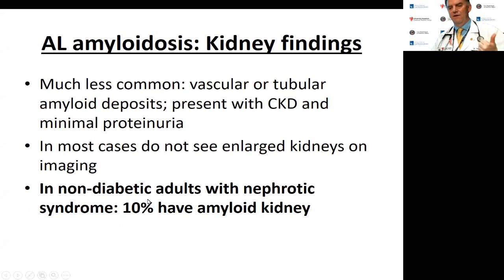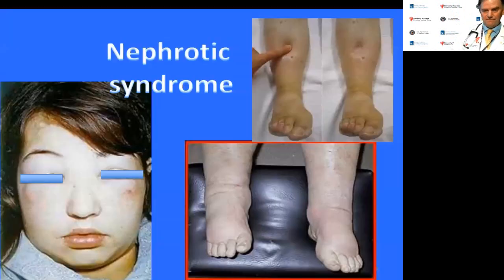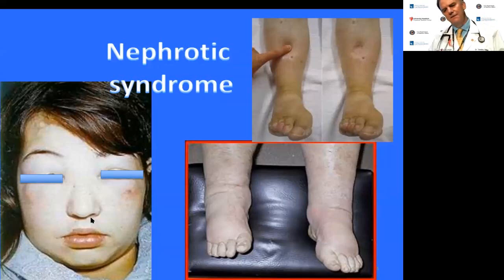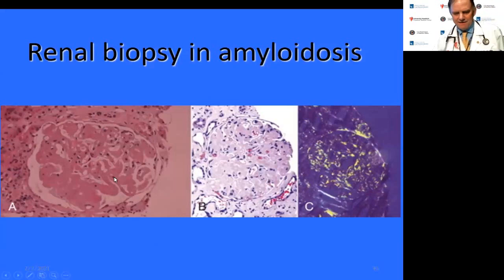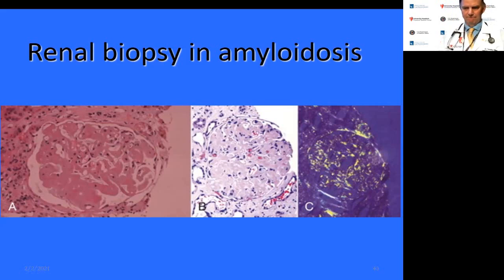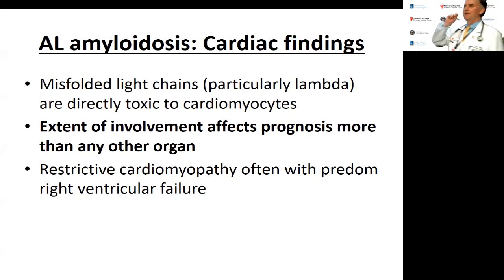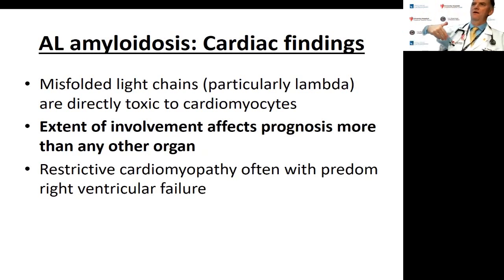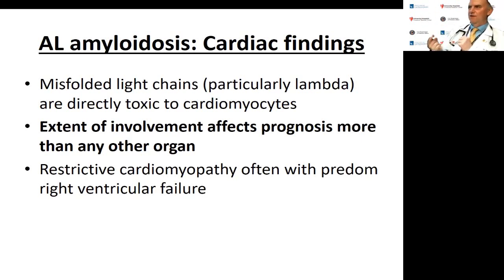With nephrotic syndrome you can get pitting edema and occasionally anasarca. On renal biopsy it's classically a glomerular disorder with nephrotic-range proteinuria. If a myeloma patient with renal failure has a 24-hour UPEP showing mostly albumin, that should raise alarm bells — it's probably amyloid or light chain deposition disease, not myeloma kidney — and this affects transplant eligibility.